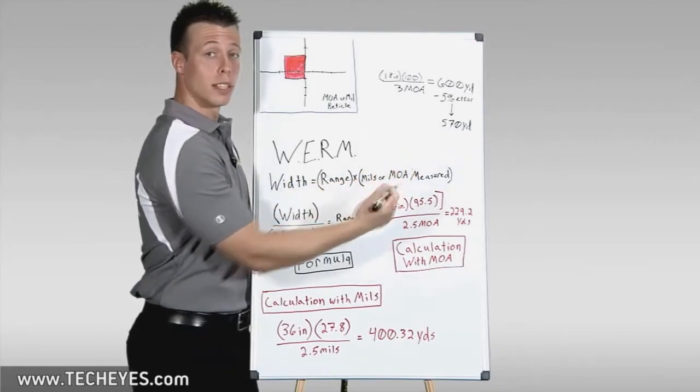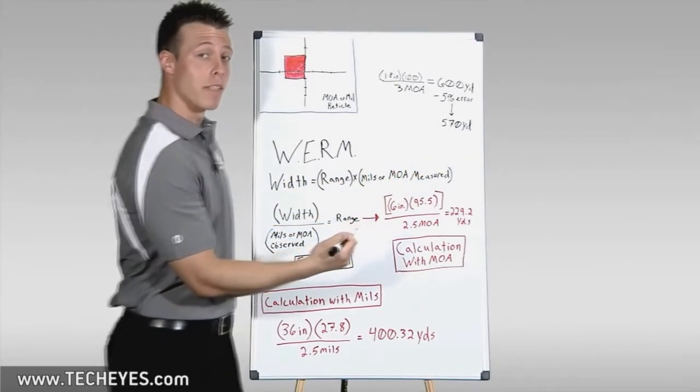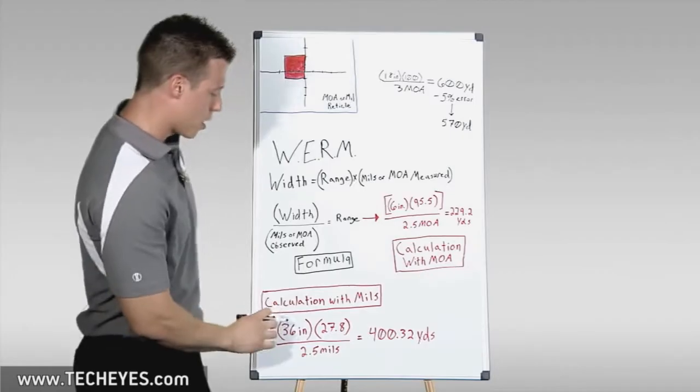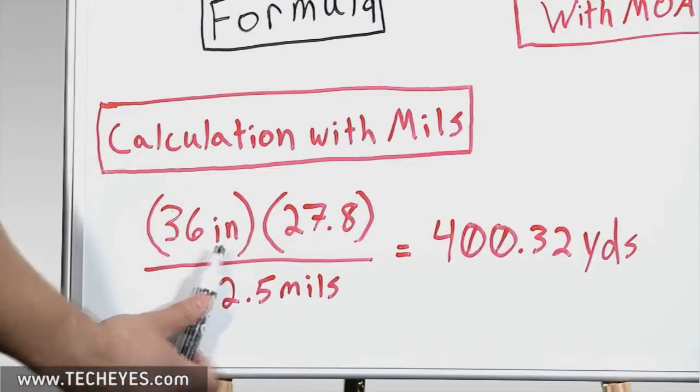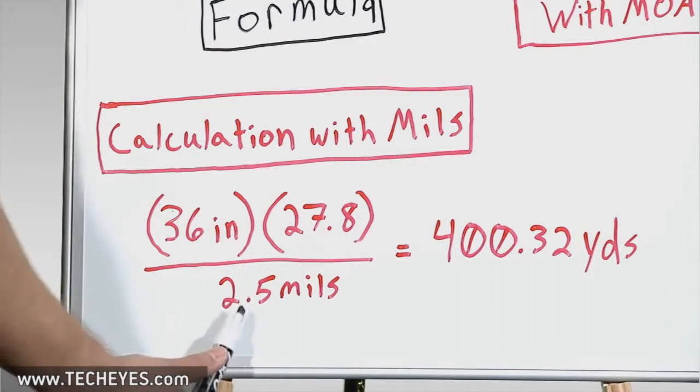Let's mix it up a little bit. Let's try a problem with mils instead of minute of angle. If we look down here, we'll say our target is 36 inches wide, a one-yard wide sheet of cardboard. We're milling out our target, and we see that it takes up 2.5 mils instead of 2.5 MOA.